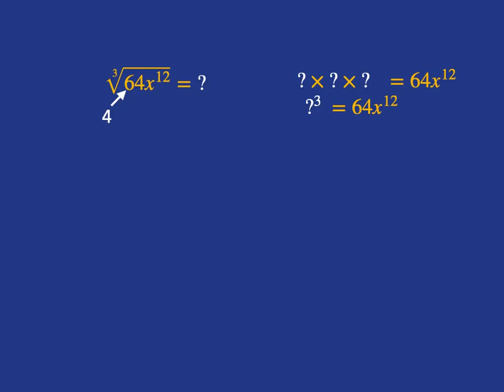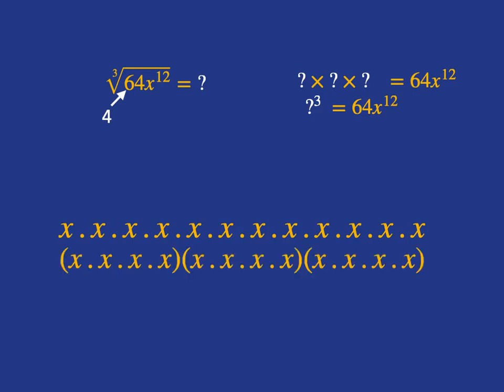We've got to deal with the x to the 12. We can deal with that easily by just knowing what x to the 12 means — x to the 12 just means you've got 12 x's all multiplied together. Now we want to have something times something times something to get us to x to the 12, so we want to split it up into three groups. We can split those 12 x's up into three groups and we'll have 4 x's in each of those three groups.